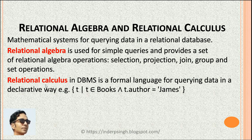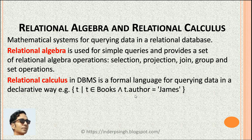Relational calculus in DBMS is a formal language for querying data in a declarative way. By declarative way I mean that we do not give instructions about how to go about querying the data. For example, in relational calculus we can write something like T standing for a tuple such that T belongs to the books relation and the author attribute value in that tuple is James. DBMS internally uses relational algebra for simple queries and relational calculus for complex queries.